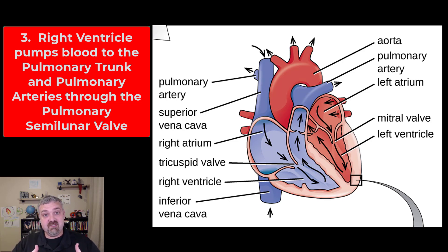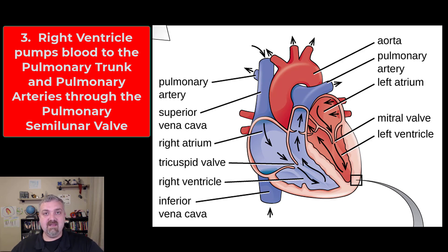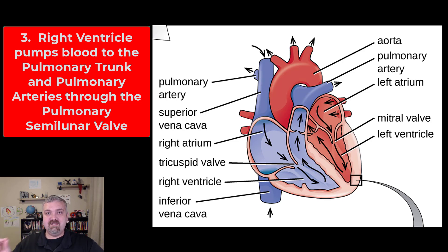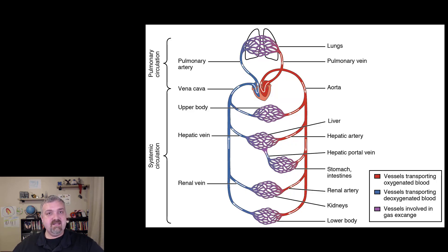Now that the valves are slammed shut, blood is going to flow from the right ventricle to the pulmonary trunk through the pulmonary valve, or pulmonary semilunar valve. Then it flows into the pulmonary arteries where it's carried to the lungs to drop off CO2 and pick up oxygen. Now we're in what's called the pulmonary circuit — the right side of the heart sending blood to and then receiving blood back from the lungs.